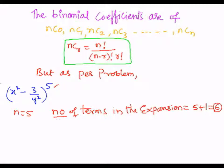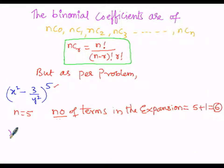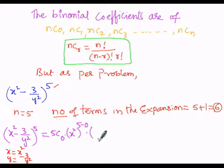Now let us find the binomial coefficients nC0, nC1, nC2, and so on. Expanding (x² − 3/y²)^5, we replace x with x² and y with −3/y². The first term is 5C0 times (x²)^(5−0) times (−3/y²)^0.